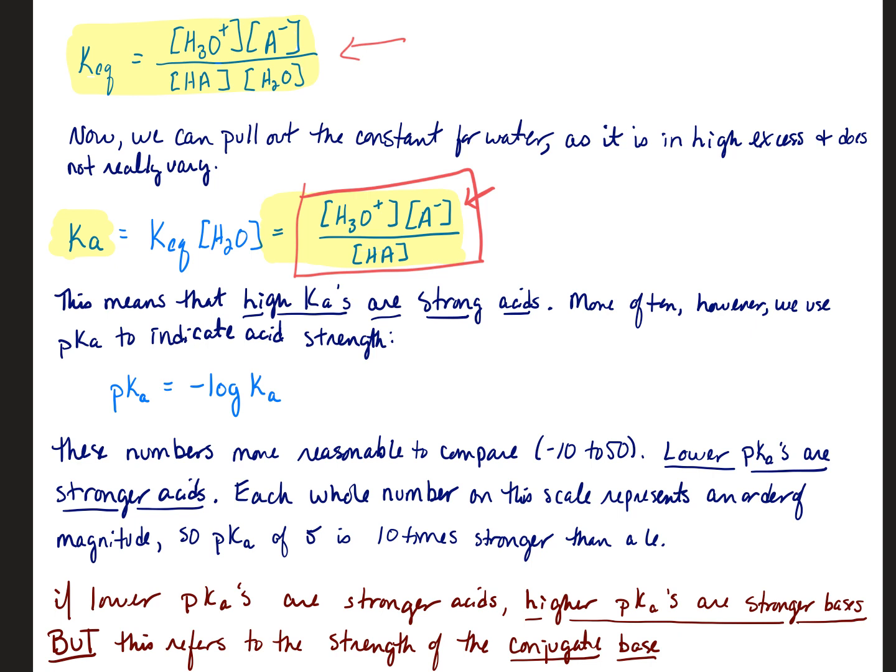But more often we use, like we did with pH, a different term. We use something called pKA, partially because those KAs get so large that they get really hard to manage. So pKAs are based on the negative log of KA, which means that they will usually be around negative 10 to 50.